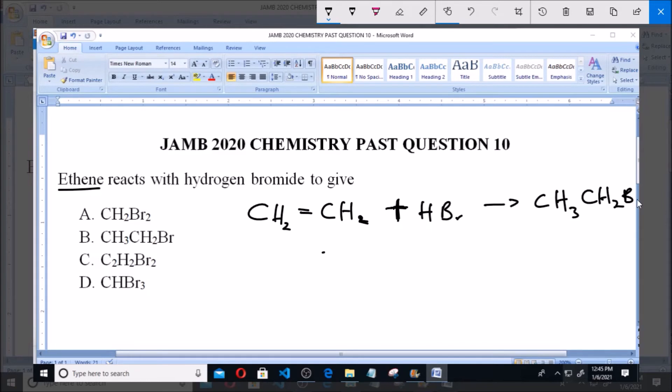CH3CH2Br. Now hydrogen and bromine has been added to this ethene to make it saturated, thereby giving us 1-bromoethane, and that is option B.